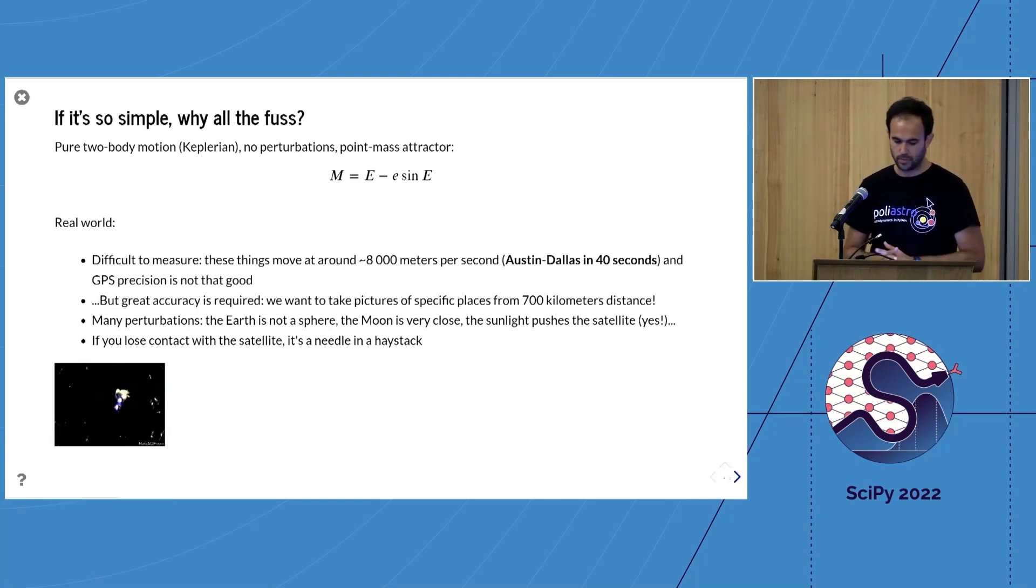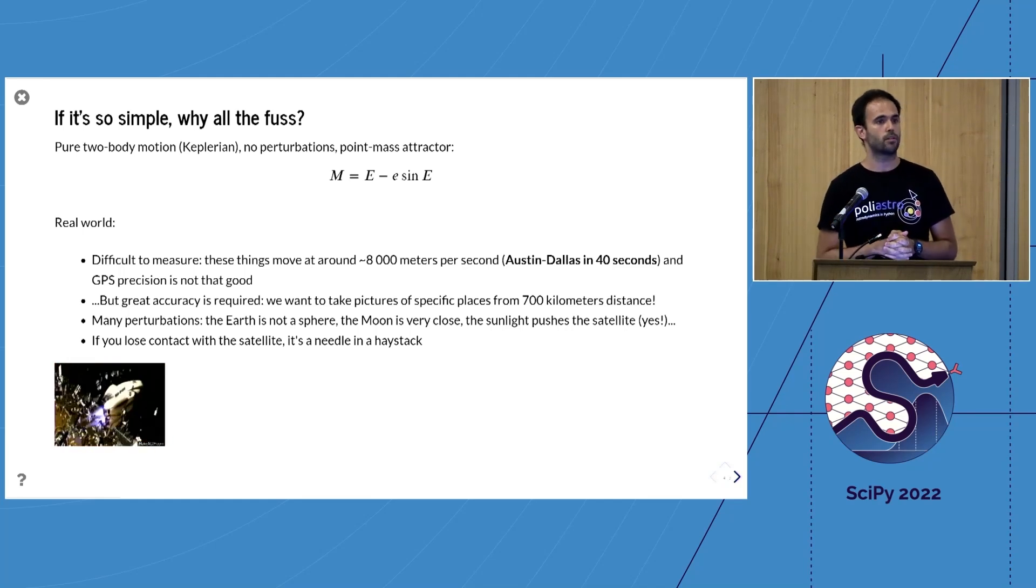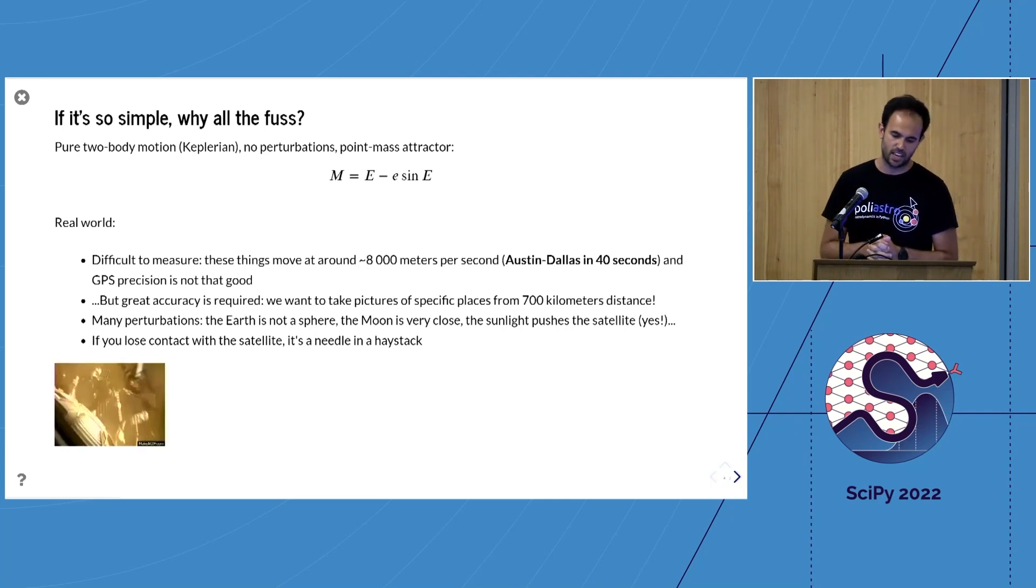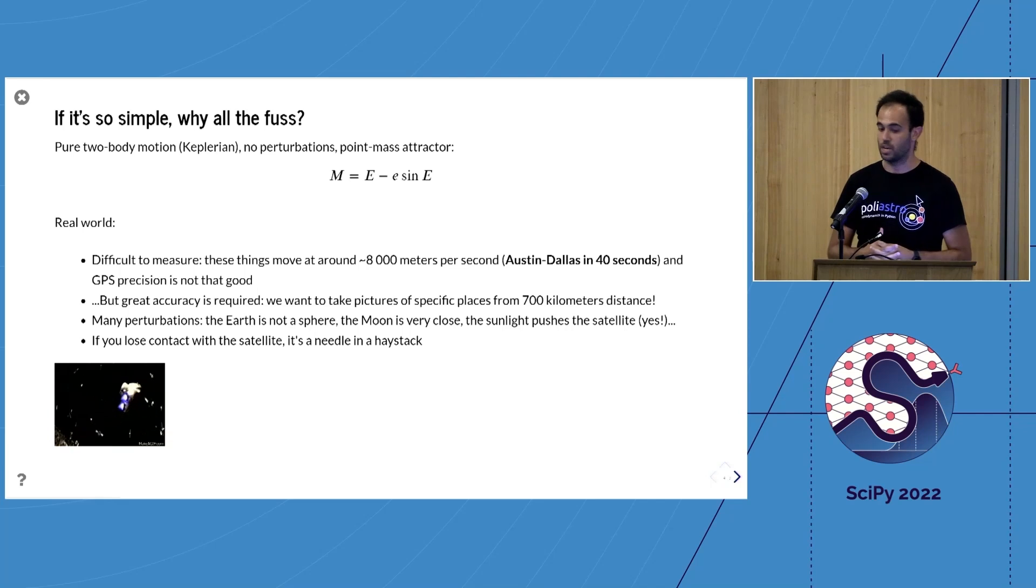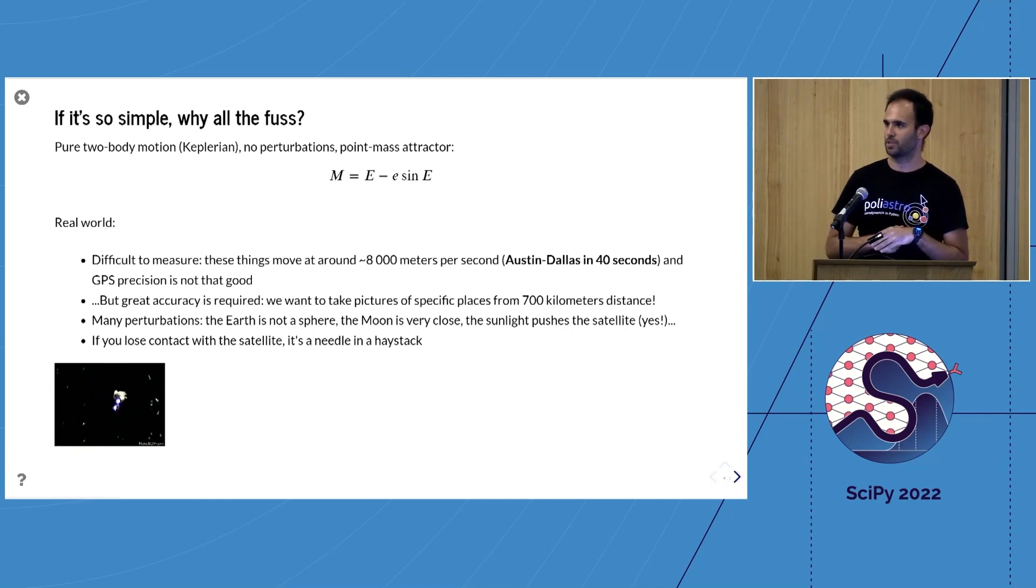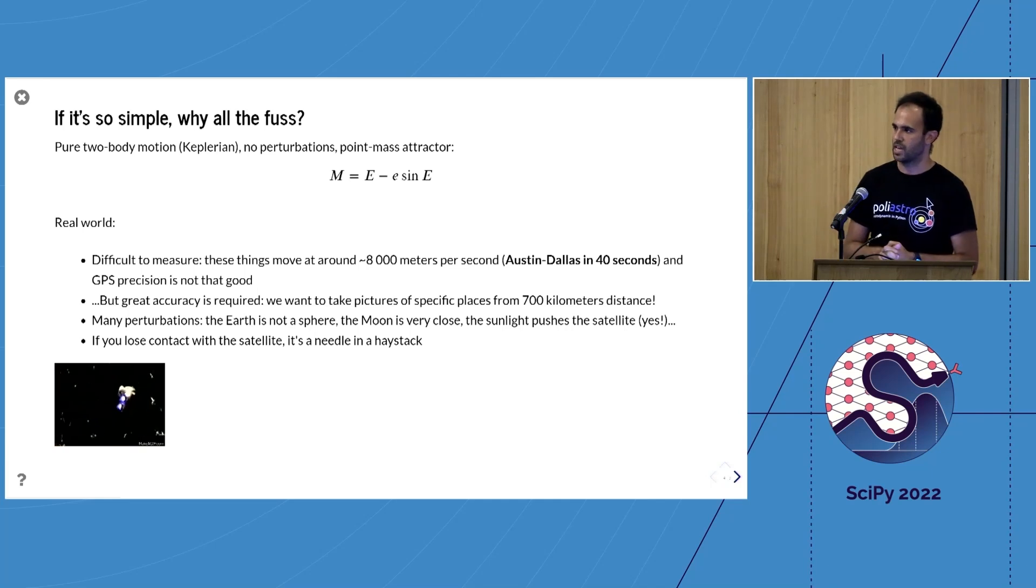In the real world, there's much more to it. These things are very difficult to measure. To give you an idea, a satellite in low earth orbit moves at about 8,000 meters per second, which means Austin to Dallas in 40 seconds. GPS precision is not that good—as soon as you make any mistake, the error in position or velocity is going to be huge. But you want accuracy because you want to detect collision possibilities and know exactly where to point the satellite.